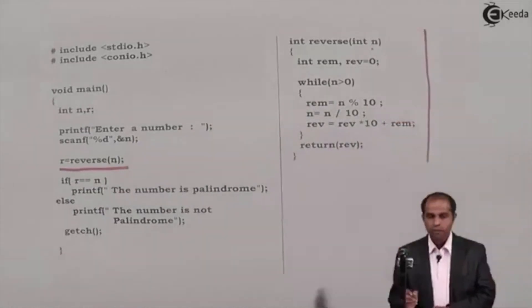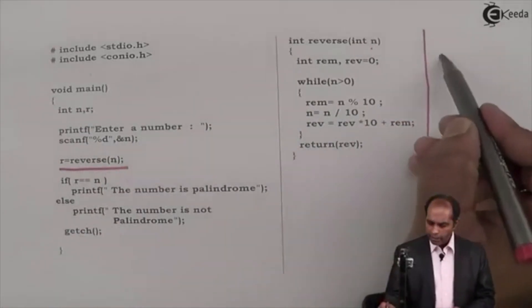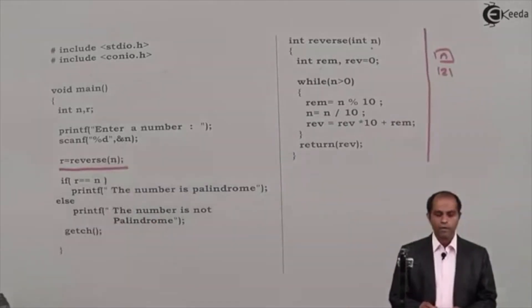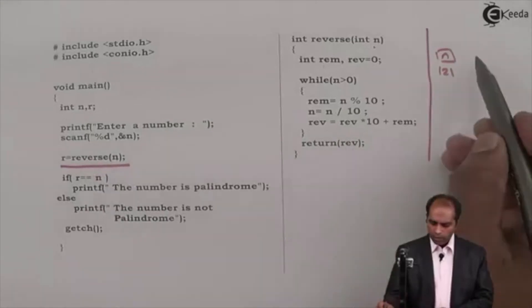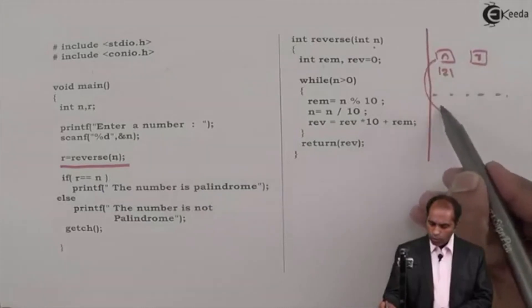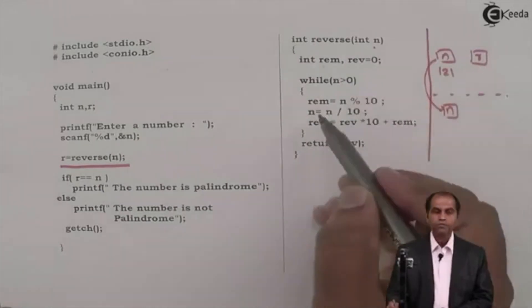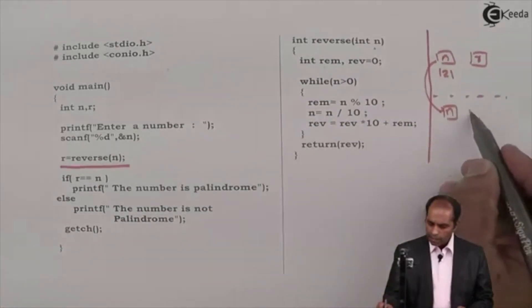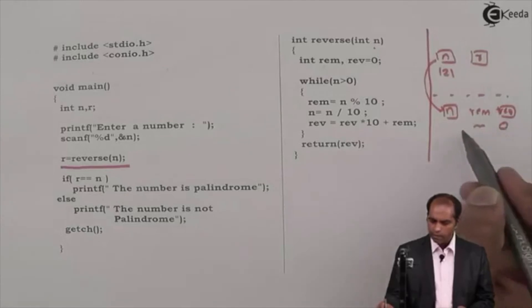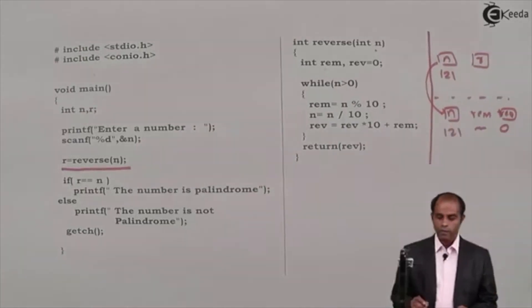Let me take an example for this. So let me take n. n is what? 121. Assume that the user enters 121. From this your r is declared but does not have any value. n is copied onto one more n at this place. Take a variable as remainder as rem, rev as rev. Set rem, rev as 0 and n is 121.